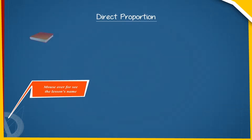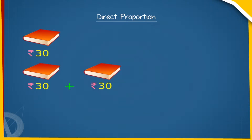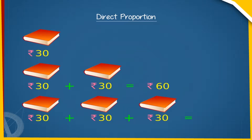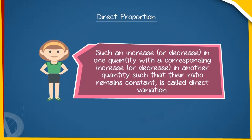Direct Proportion. Suppose the cost of a book is Rs 30, then the cost of two such books is twice this amount, i.e. Rs 60. The cost of three such books is thrice, i.e. Rs 90, and so on. Such an increase or decrease in one quantity with a corresponding increase or decrease in another quantity such that their ratio remains constant is called direct variation.